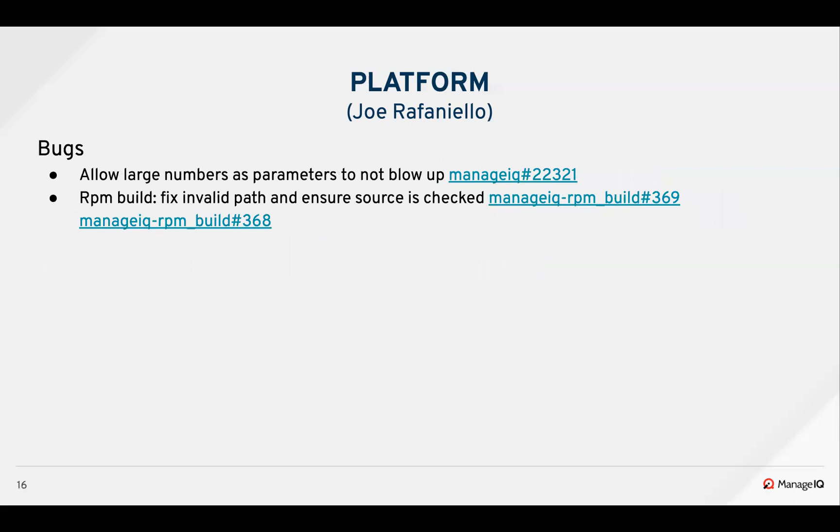For core bugs: Kenan fixed an issue where Rails 6171 was released and changed some defaults around a possible security issue, so he temporarily resolved that for us. And Jason fixed a few RPM build issues to use a correct executable path and ensure the source is checked out when building.